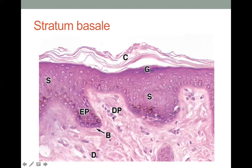Looking at a histological image: the stratum corneum is at top, then granulosum, then spinosum, and the single layer of cuboidal cells adherent to the basement membrane adjacent to the papillary dermis is the stratum basale.